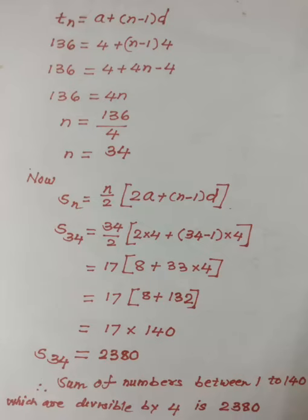Now we can put the value n = 34 into the formula for Sn, that is, the sum of n terms of an AP. We know Sn = (n/2) × [2a + (n - 1)d].